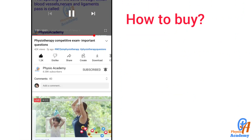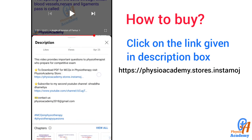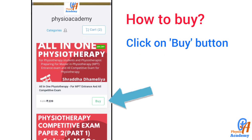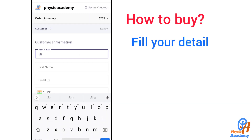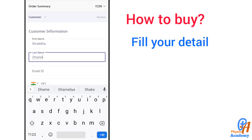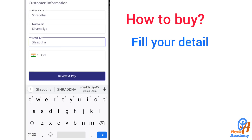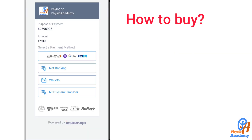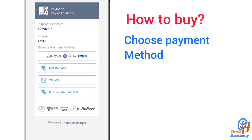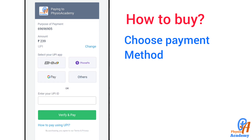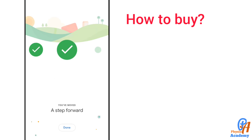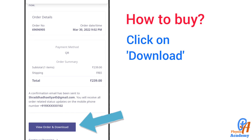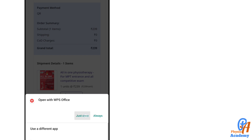To buy this book, click on the link given in the description box. This will open a page where you click on the buy button, then click on the pay button. You can choose a payment option, and after entering your card details or completing a successful payment, you can download the PDF file and open the book.